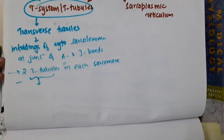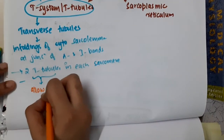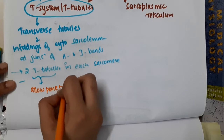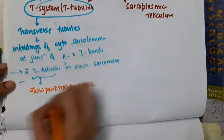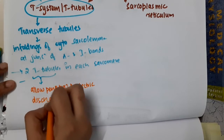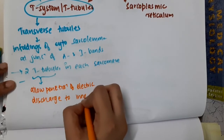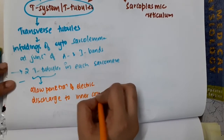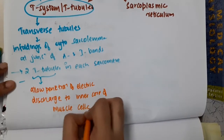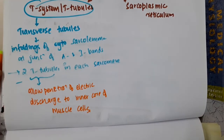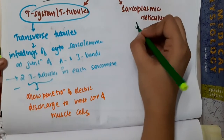These T-tubules allow penetration of electrical discharge to the inner core of muscle cells.